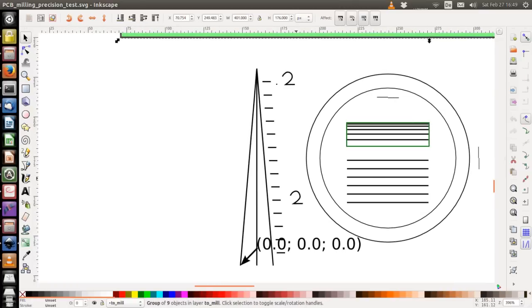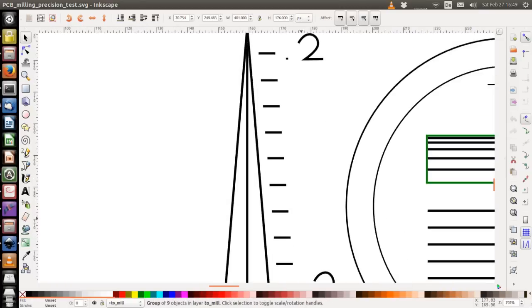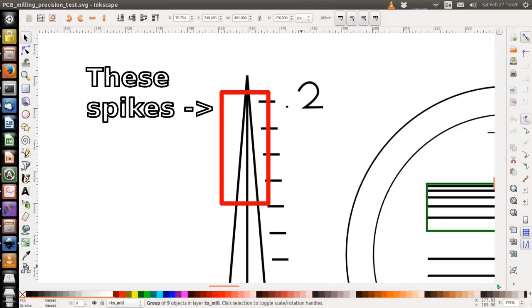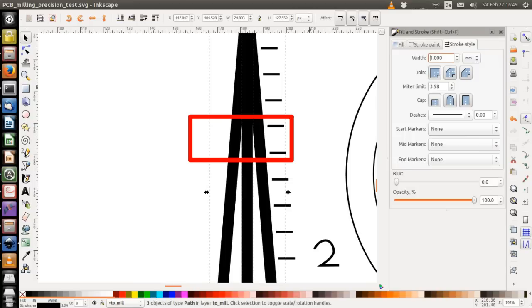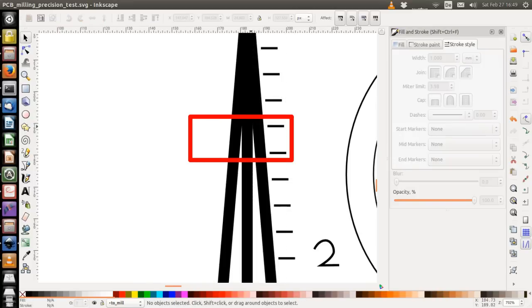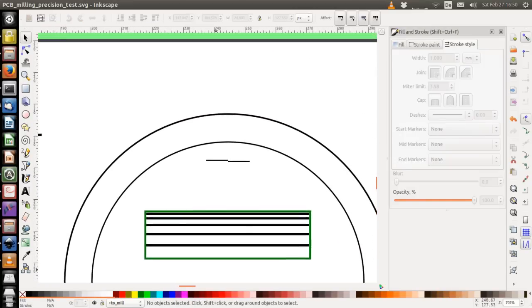When the groove is only 0.2 millimeters wide, the spikes here will be visible up to here. When let's say the groove is 1 millimeter thick, the spikes will end here. There are two circles for backlash measuring.